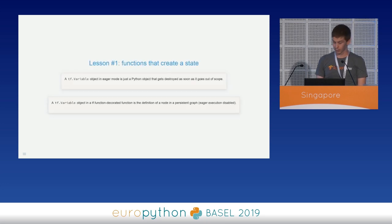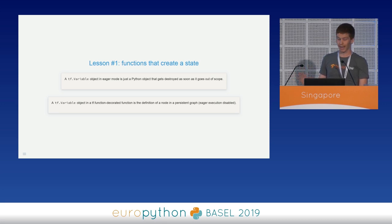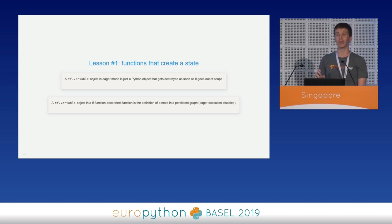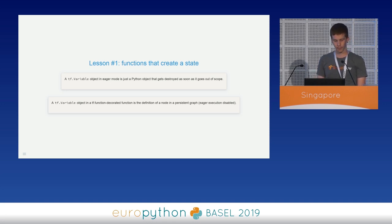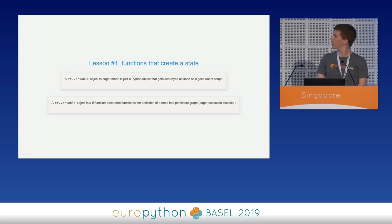This exception brings us to the first lesson. A tf.Variable object in eager mode is just a Python object that gets destroyed as soon as it goes out of scope — that's why the function works correctly in eager mode. But a tf.Variable in a TF function decorated function is the definition of a node in a persistent graph, since eager execution is disabled in that context. Since the graph is persistent, we cannot define a new variable every time we call the function.